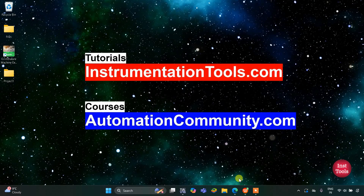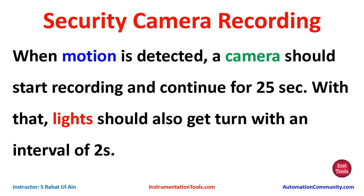Hello everyone, welcome to automation community. Today in this video we are going to discuss an example about a security camera. When motion is detected, a camera should start recording and continue for 25 seconds. With that, a light should also turn on with an interval of 2 seconds.